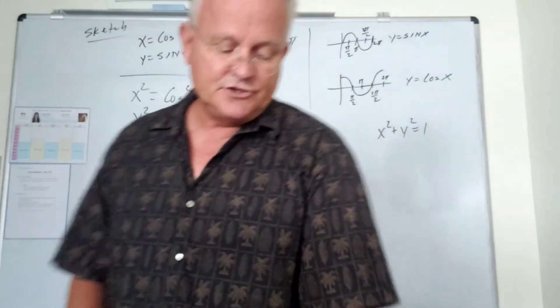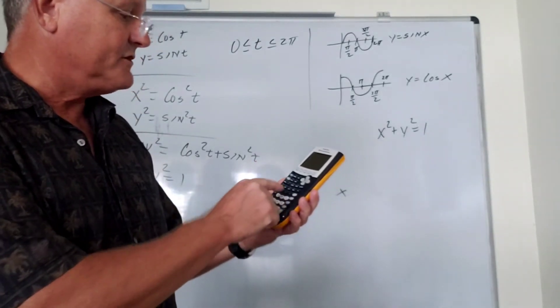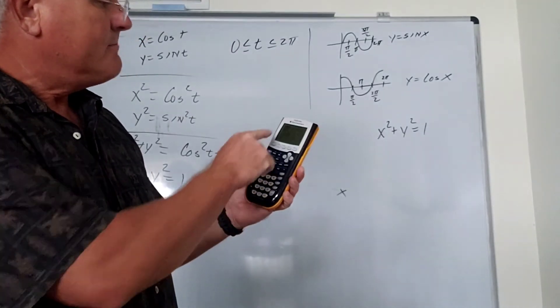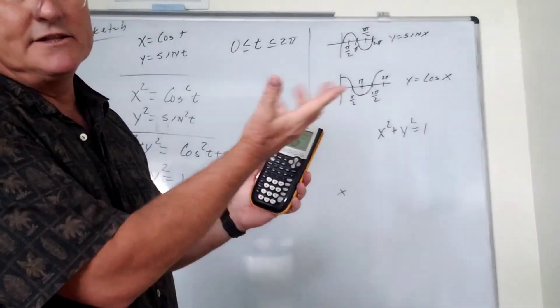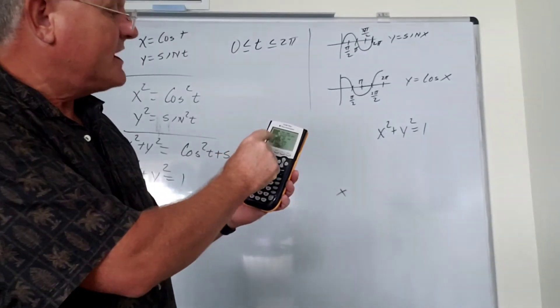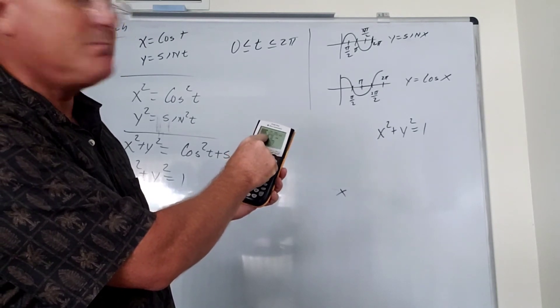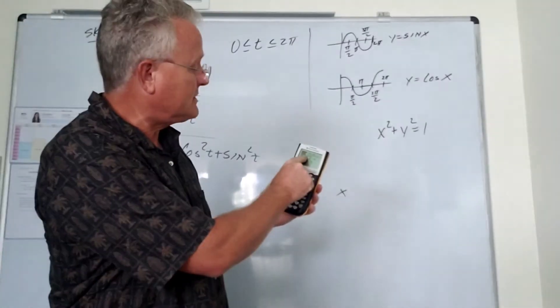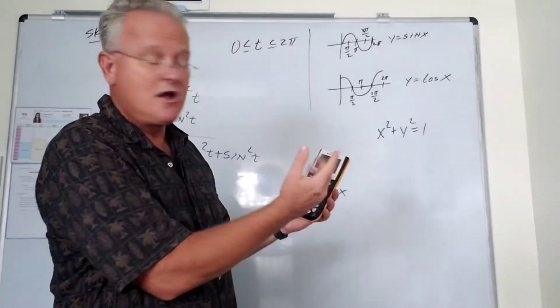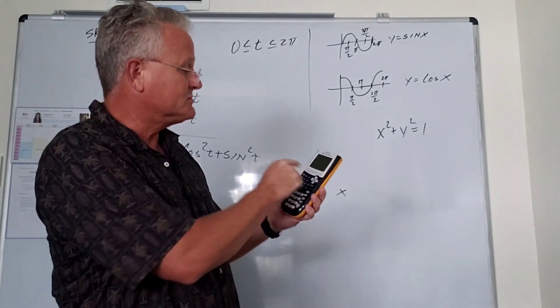Now, this is much easier to do on your calculator. To do this on your calculator after you turn it on, first go to the mode. Make sure that you're in radians. I'm going to use radians, you could do degrees, but radians. Then the fourth row down, you see function, PAR, that's parametric, POL and SEQ for sequence. We want PAR for parametric. So make sure that's highlighted.